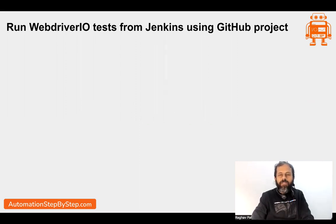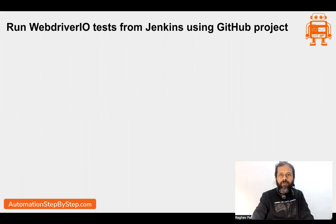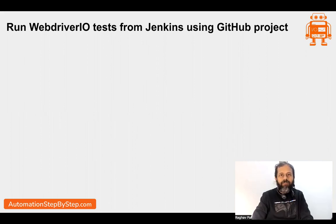However, that time we were using our local project. But now in this session, we will see how we can use Jenkins to first clone our project from the GitHub repository and then, using the same project and same repository, we will run our tests. This is going to be very easy and very interesting. This is actually how we do it in actual projects in organizations, so we are coming very close to doing the actual CI/CD part. So let's get started.